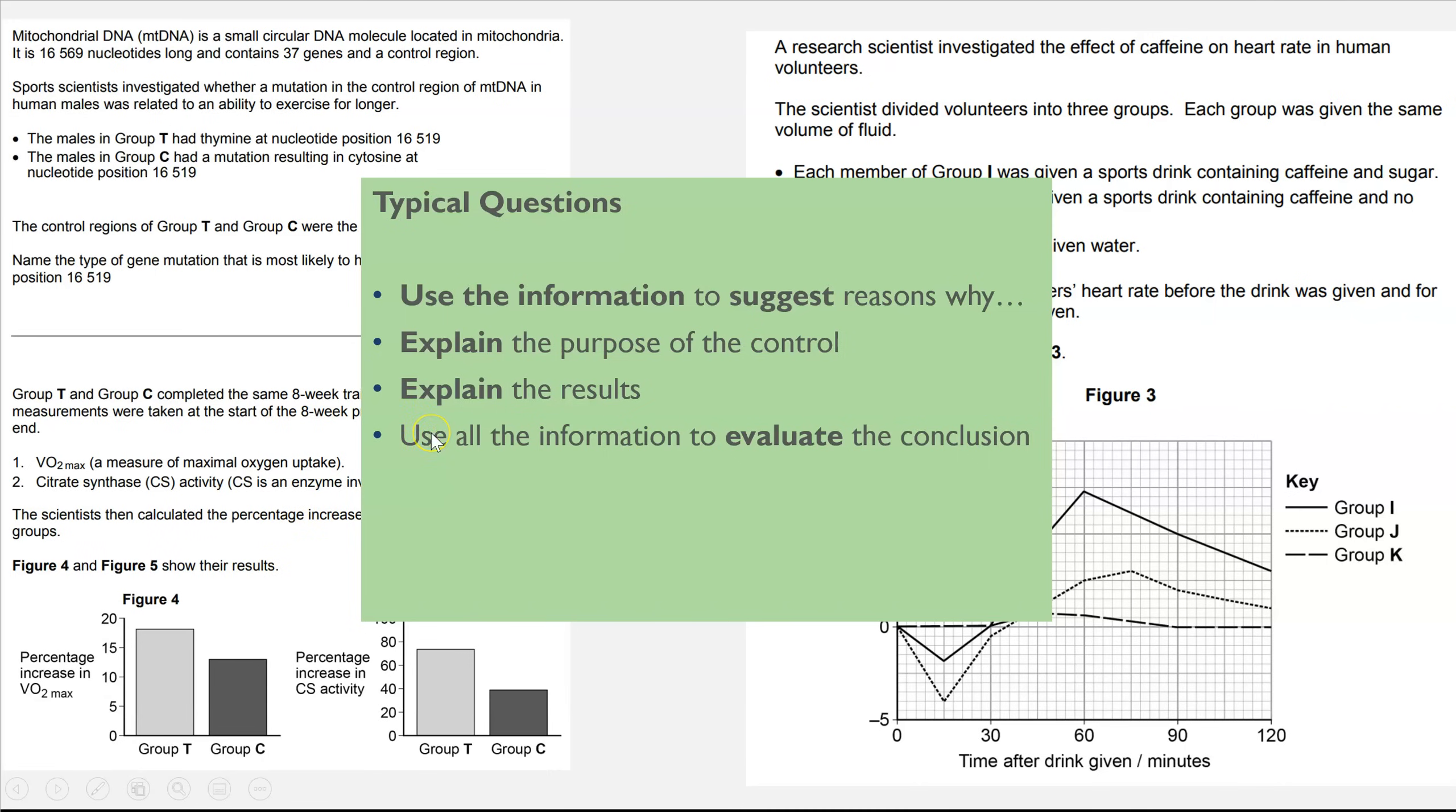And the final type of question, which actually I've got some other alternatives, we've got use the information to evaluate the conclusion, but it could also be phrased in these other ways as well. So do you agree with the conclusion? What can you conclude from the data? And do you trust the conclusion? So those four are essentially the same question, just phrased differently. And this is the big one that we're going to focus on because you nearly always get asked one of these four linked to a critical analysis question.